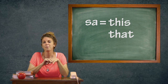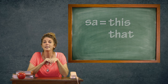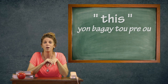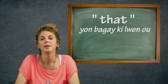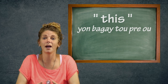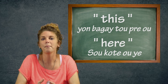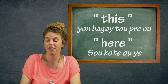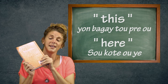Ki jan ou konnen kilè pou itilize yo? Ki jan ou konnen kilè pou sèvi ak mo "this" ak mo "that"? Ou ka itilize "this" lè ou pale de yon objè ou swa moun ki prè. "This" ka asosye ak mo "here", paske yo tou de pale de bagay ki pwòch, nan menm kote ou ye. This is my pen. This is my book.